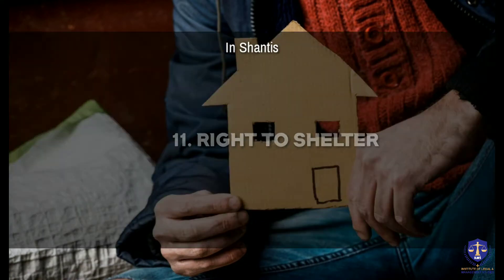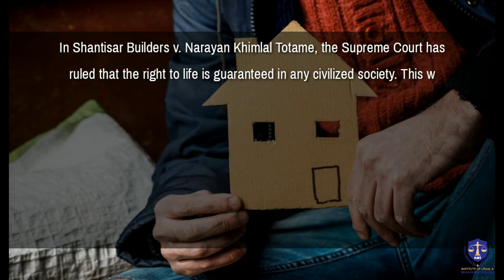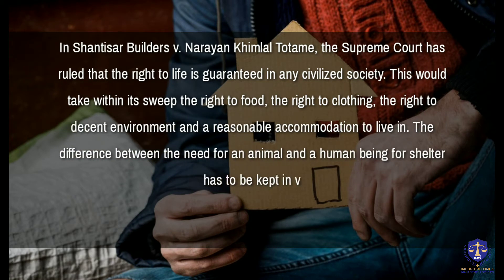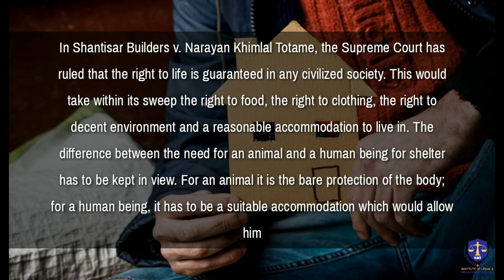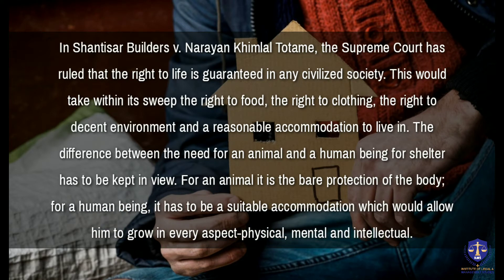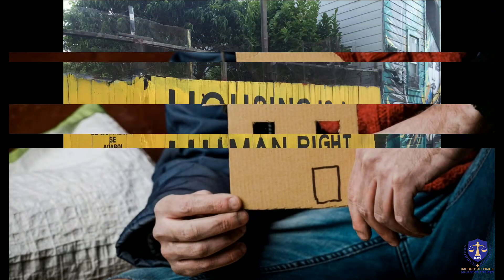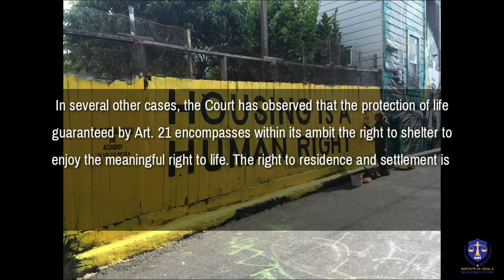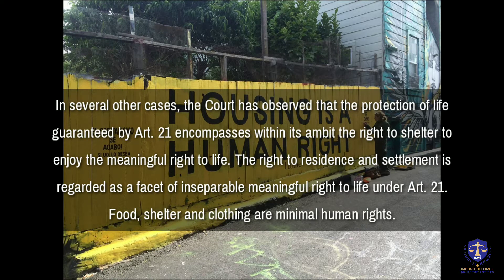Right to Shelter. In Shanti Star Builders vs Narya and Kheemlal, the Supreme Court ruled that the right to life is guaranteed in any civilized society. This would take within its ambit the right to food, the right to clothing, and the right to a decent environment and reasonable accommodation to live in. The difference between the need for an animal and a human being for shelter must be kept in view. For an animal, it is the bare protection of the body; for a human being, it must be suitable accommodation allowing him to grow in every aspect — physical, mental, and intellectual. The right to residence and settlement is regarded as a facet of the meaningful right to life under Article 21. Food, shelter, and clothing are minimal human rights.